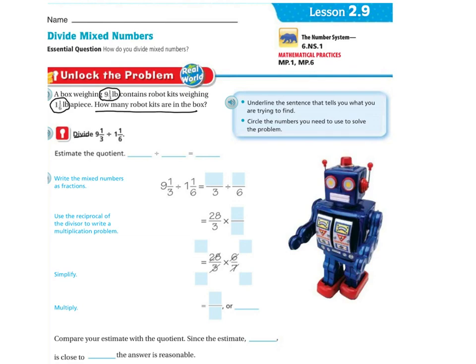So I'm going to divide nine and one third by one and one sixth. If I want to estimate the quotient: nine and one third is closer to nine, and one and one sixth is closer to one, so nine divided by one is nine. My answer should be somewhere around nine.